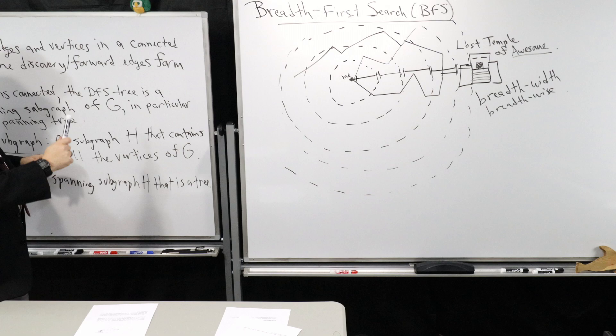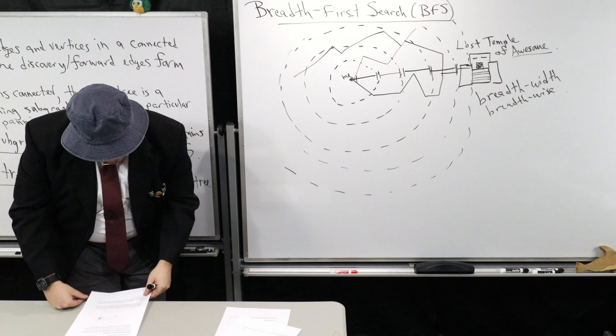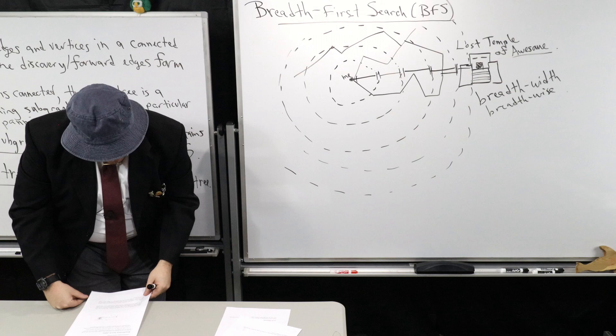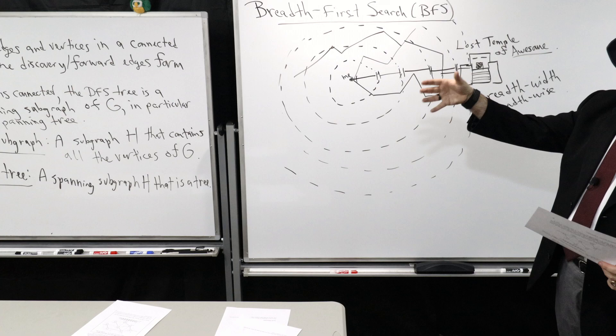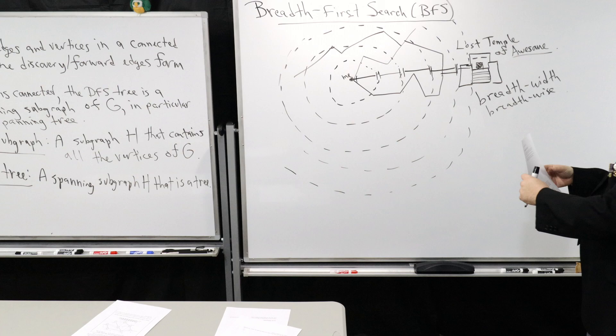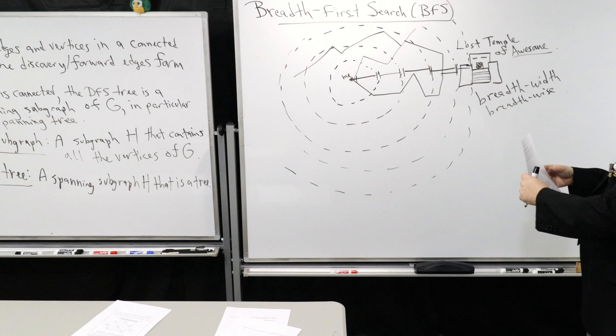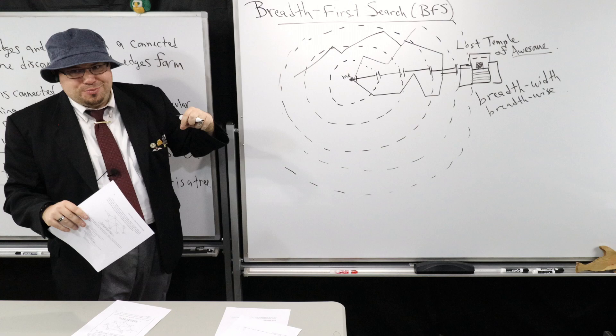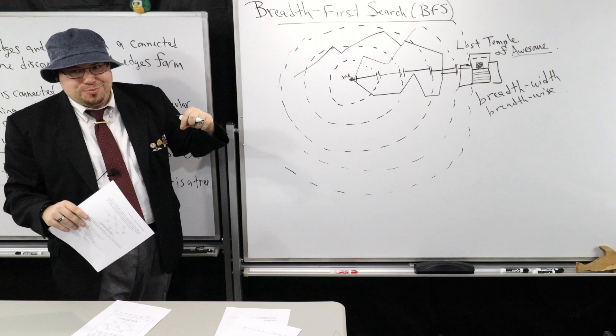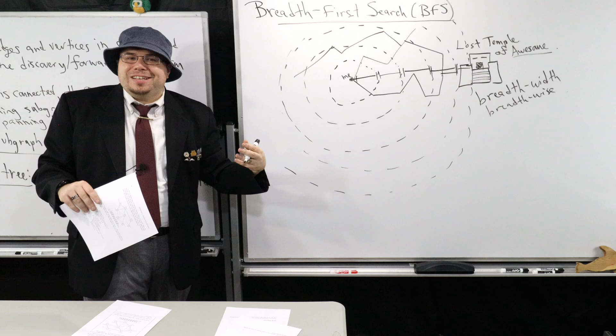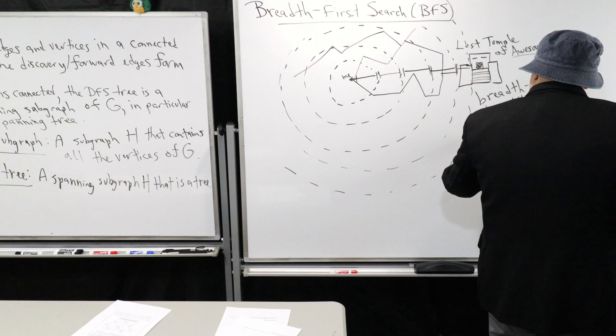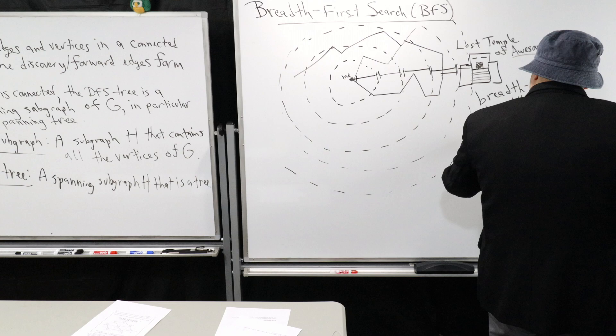Next day I'll talk more about breadth-first search. Depth-first search was tied intimately with a stack — we had the call stack and used stacks in all our applications. You might ask: what data structure is intimately tied with breadth-first search? Think about it: if you have a stack, that allows me to keep going deeper and deeper. But every time I make a step and find something new, the order in which I do that should go naturally into a queue. So breadth-first search is related to using a queue.